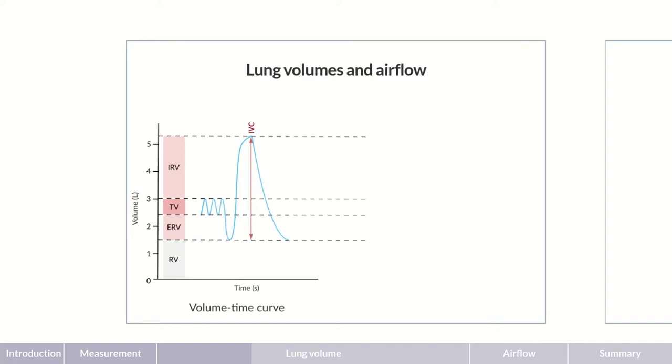Two values are measured during this process. First, the maximum forced expiratory volume of air expired within one second after maximal inspiration is termed FEV1. Second, the maximum volume of air forcibly expired after maximal inspiration is measured. This is termed forced vital capacity, in short, FVC.